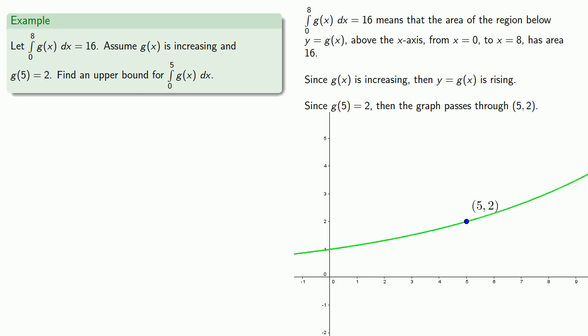Now remember the question asks us to say something about the definite integral from 0 to 5 of g of x. Now something we might do is we might write down any relationship between the things we know and the thing we're looking for. And in this case the thing that we know is this definite integral and the thing we're looking for is this definite integral. And so we might write down